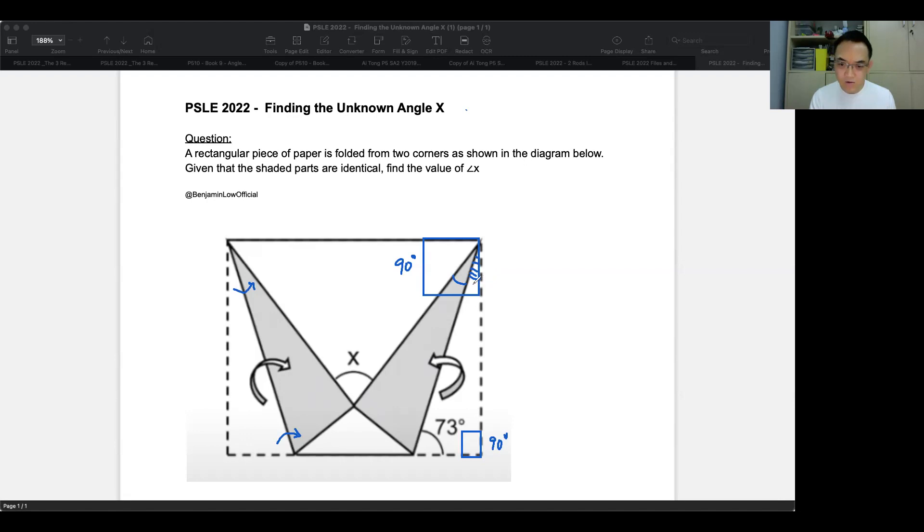So I'm going to call this first angle, angle W. You can name it anything you like. Just let me label this as W. And then since this is X, I will call this Y, and I'll call this angle Z. So first, let's find angle W.